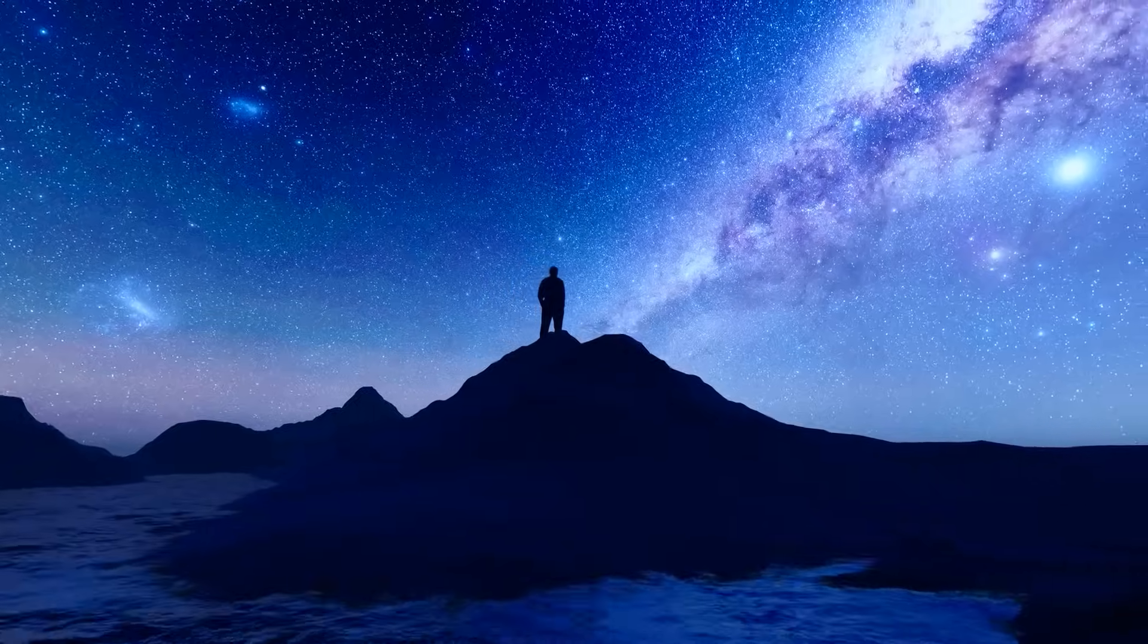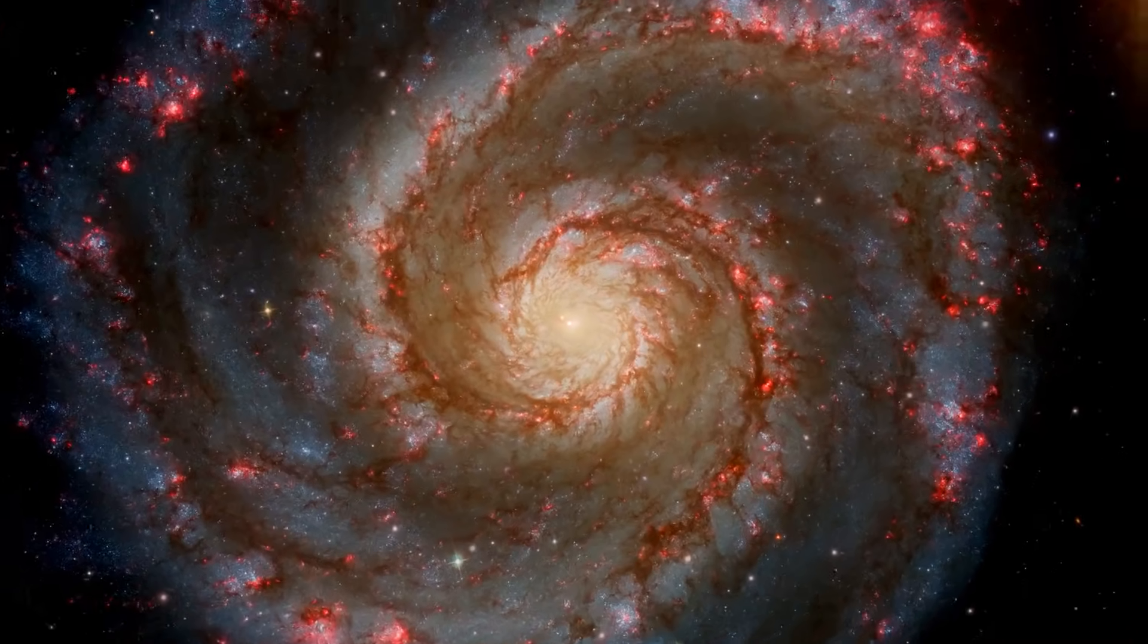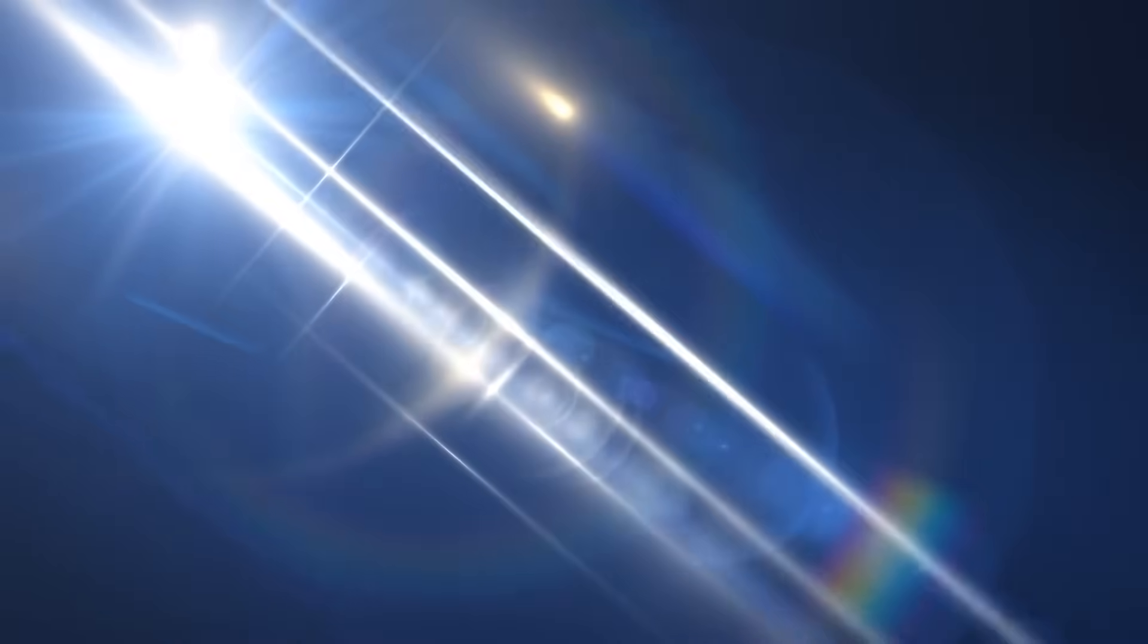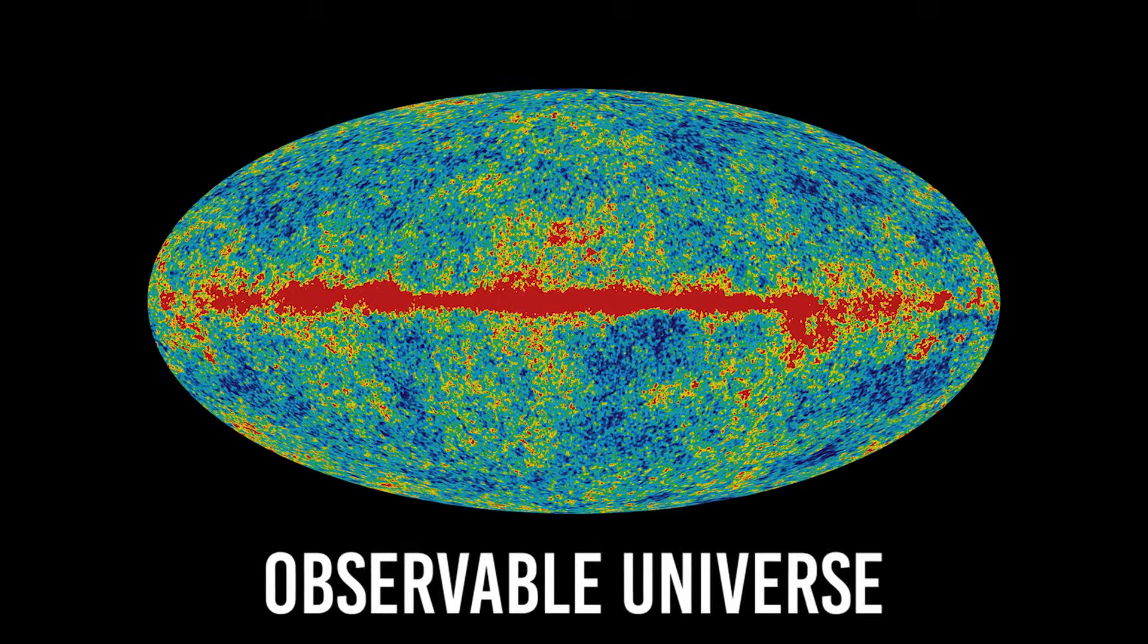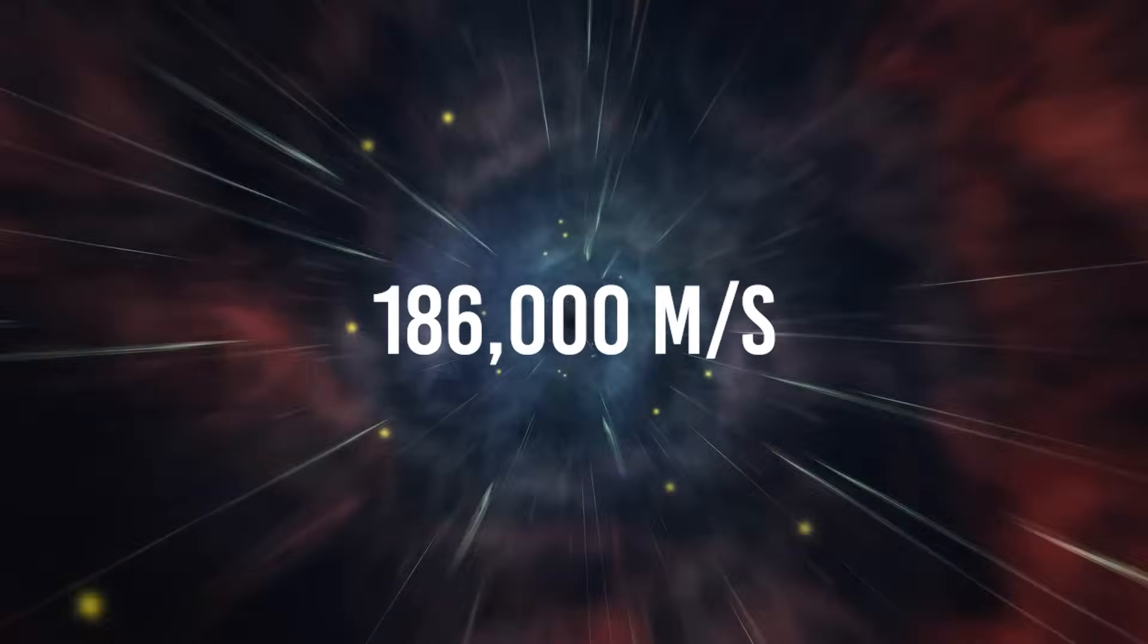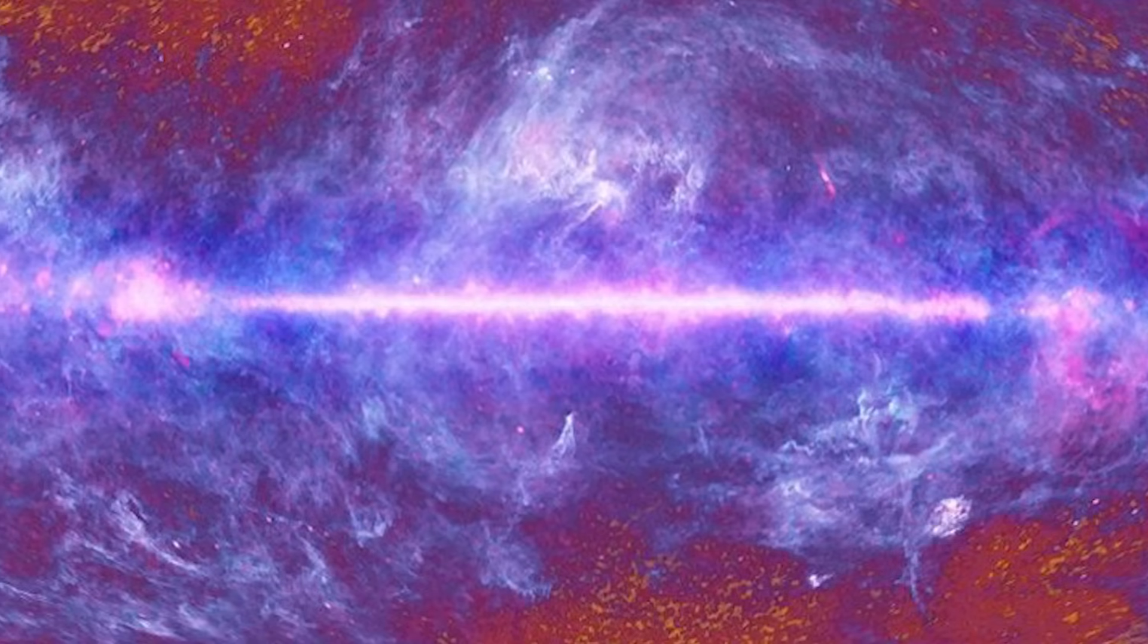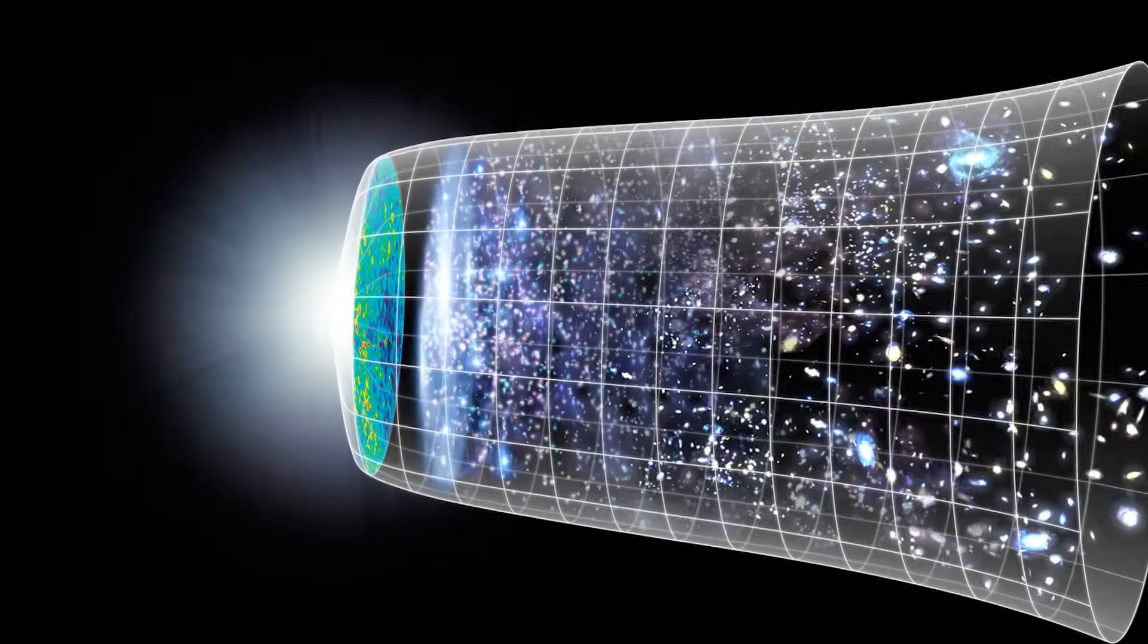Our eyes, our telescopes, our signals—how far can they reach within this vast structure? Everything we see in the universe is limited by how far light has been able to travel to us. Our observations don't show us the whole universe, only what we call the observable universe. That's because light doesn't travel instantaneously—it moves at about 186,000 miles per second. So the farther we look, the further back in time we're actually seeing. The most distant light we can currently detect is the cosmic microwave background radiation—light that was released roughly 13.8 billion years ago.